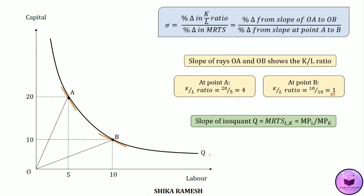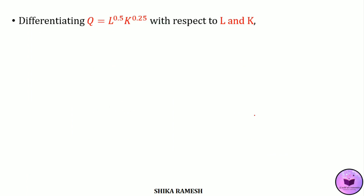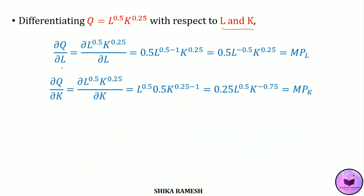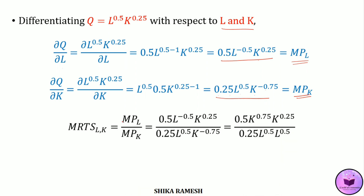Suppose the production function of this isoquant is Q = L^0.5 · K^0.25. Differentiating this production function with respect to labor and capital, we will get MPL and MPK. That is, ∂Q/∂L = ∂(L^0.5 · K^0.25)/∂L, and solving this we get MPL = 0.5 · L^(−0.5) · K^0.25. Similarly, differentiating Q with respect to K, we get MPK = 0.25 · L^0.5 · K^(−0.75).